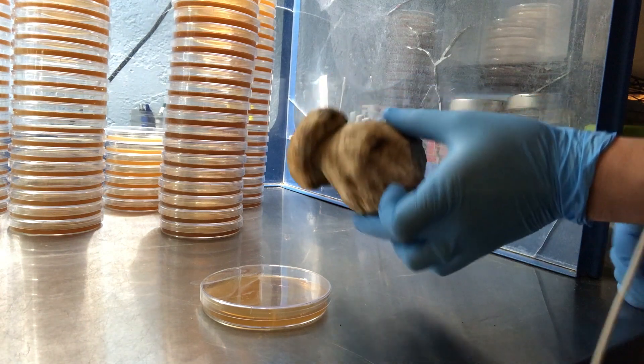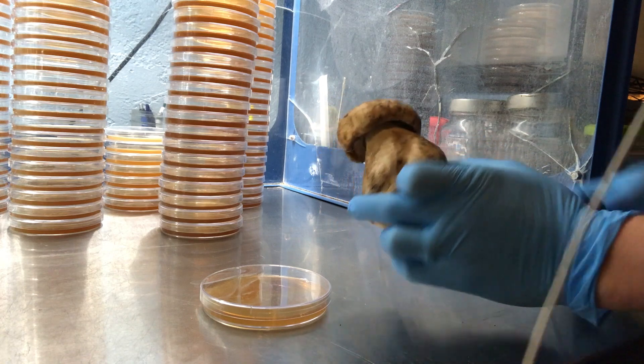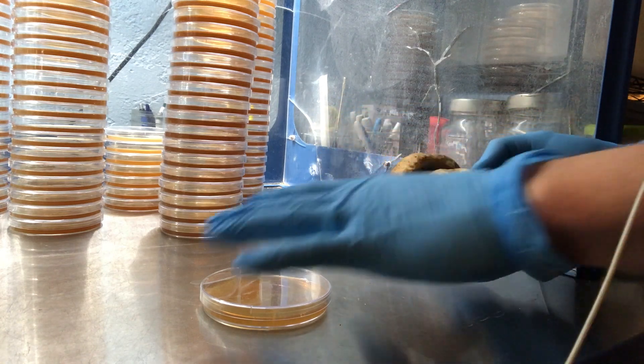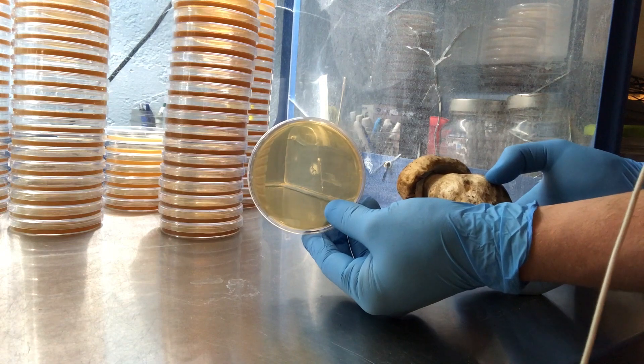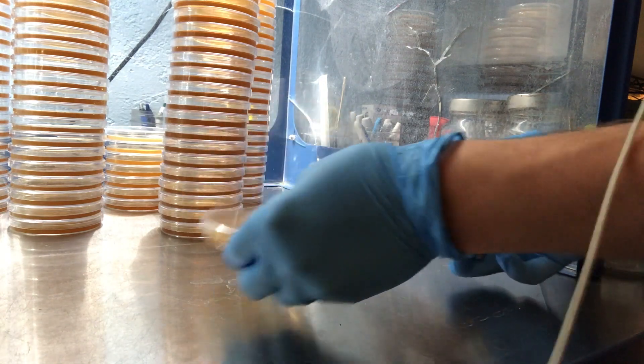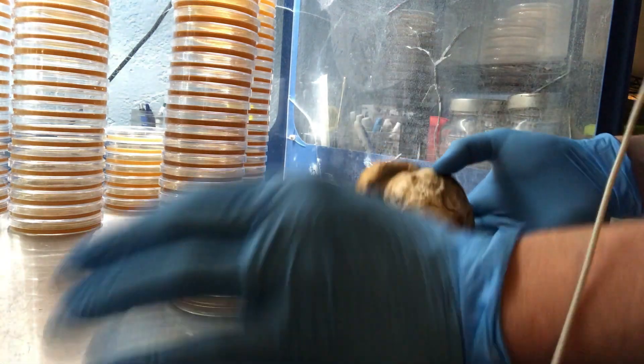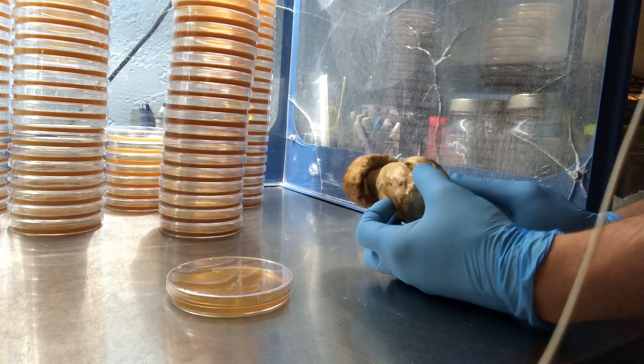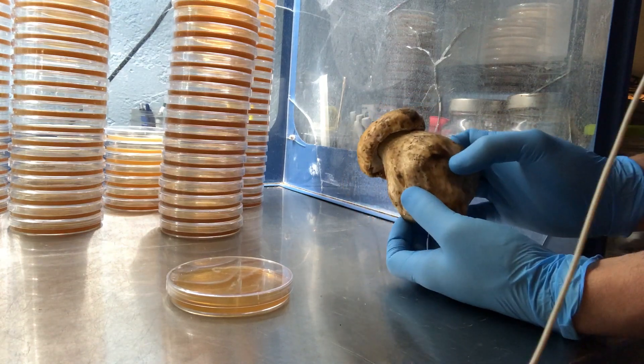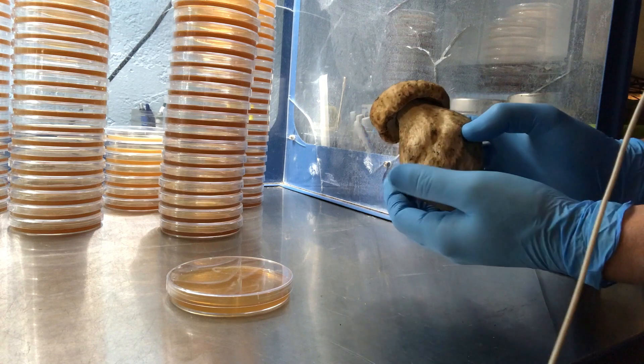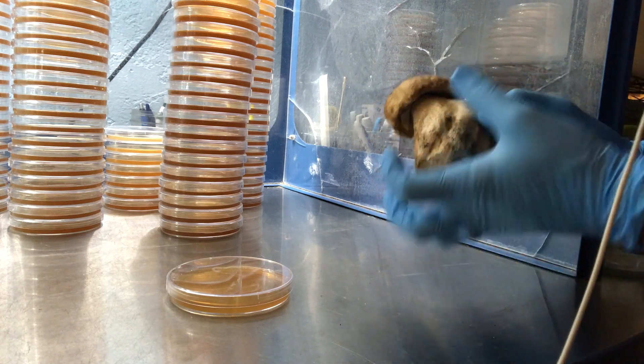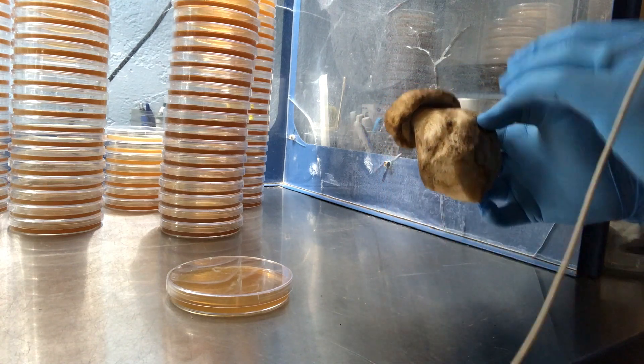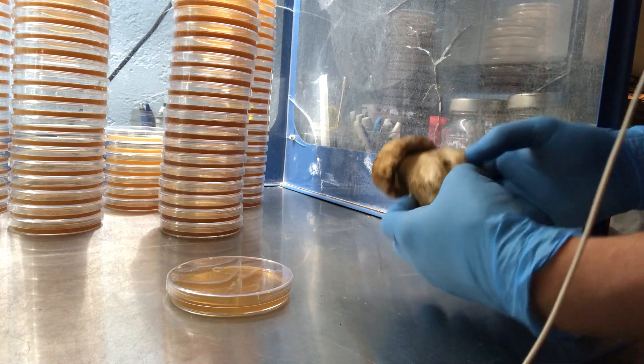Alright, okay guys, so I've got our porcini or Boletus edulis in the flow hood here and I'm going to be cloning onto an MEA plate, malt extract agar. The key thing to cloning a wild mushroom, or any mushroom for that matter, is that you don't want to introduce any contamination from the outside of the mushroom. So the best way to do this is to break it apart very carefully.